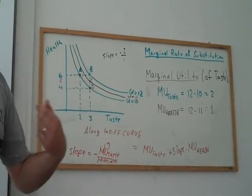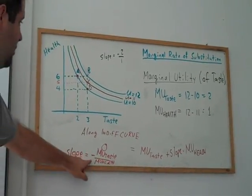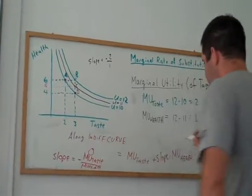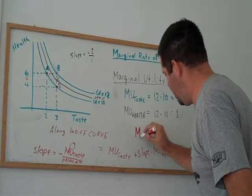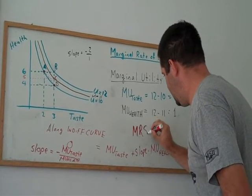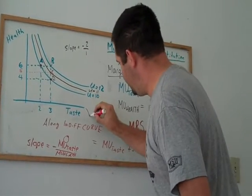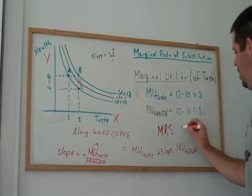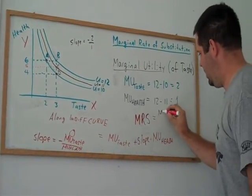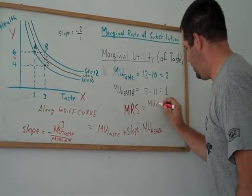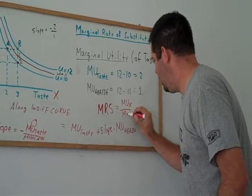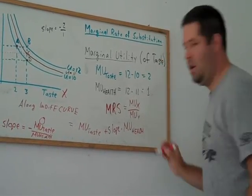Or, more generally, remember that the slope is the negative marginal rate of substitution. This gives us an equation for marginal rate of substitution. If I call this variable the x variable and this variable the y variable, this means that marginal rate of substitution is the marginal utility of x over the marginal utility of y.